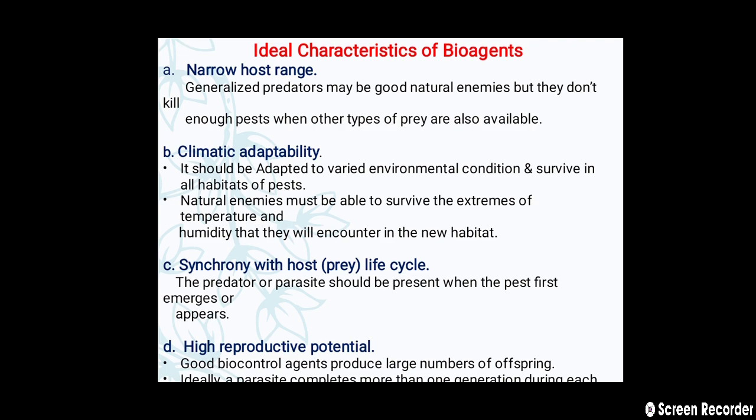The third characteristic is synchronizing with the host, that is the prey life cycle. The predator or parasite should be present when the pest first emerges or appears. The fourth characteristic is high reproductive potential. A good biocontrol agent produces a large number of offspring, and ideally a parasite completes more than one generation per year.